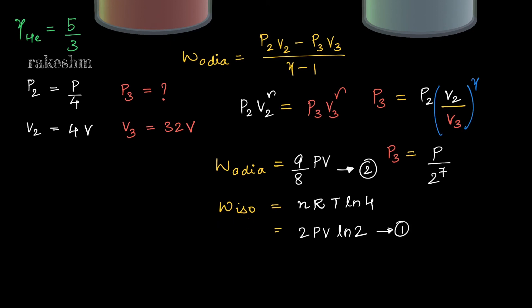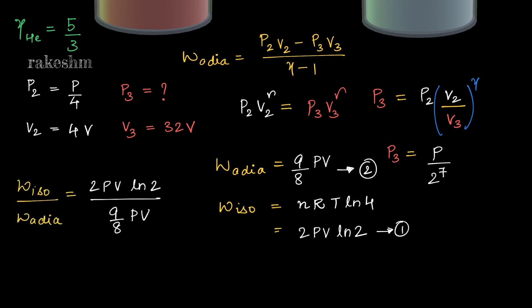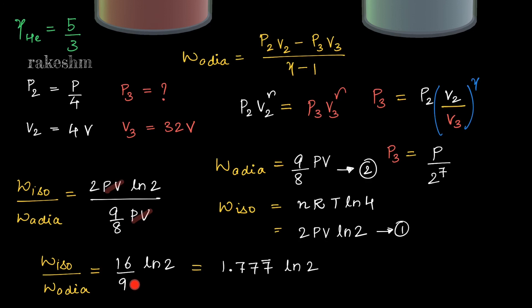The work done in the isothermal process is nRT·ln4. Writing nRT as PV from the ideal gas equation and ln4 as 2·ln2, we get W_isothermal = 2PV·ln2. The ratio W_isothermal / W_adiabatic = 2PV·ln2 / (9/8·PV). Cancelling PV, this gives 16/9·ln2, which equals approximately 1.777·ln2. Since the ratio equals F·ln2, the value of F is 1.777, which rounded to two decimal places gives F = 1.78.